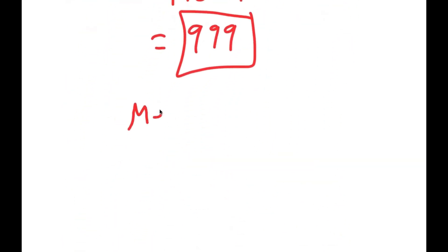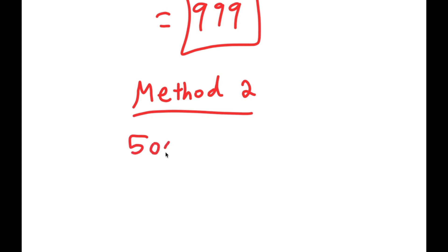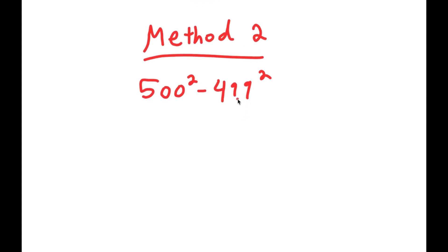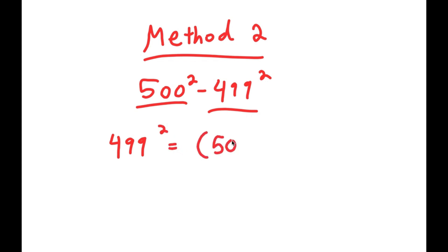For method 2, I rewrite the problem 500 squared minus 499 squared. This time, instead of rewriting 500 squared, I'm going to rewrite 499 squared. So 499 squared is the same thing as 500 minus 1, squared.